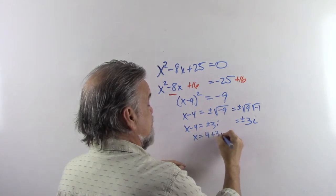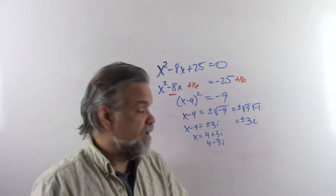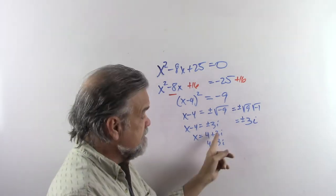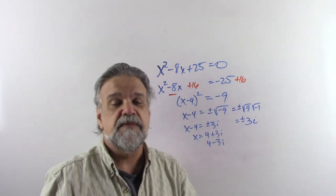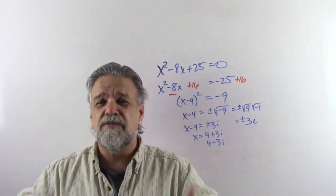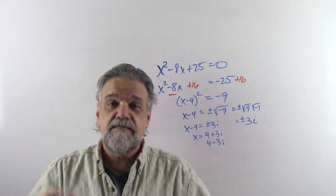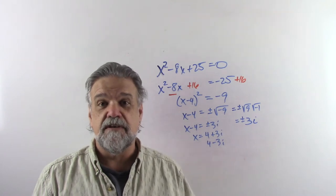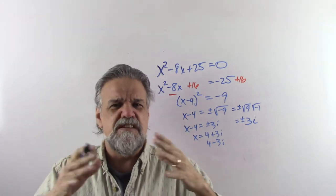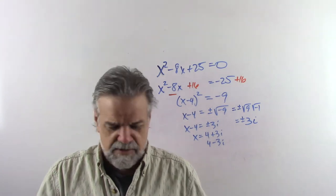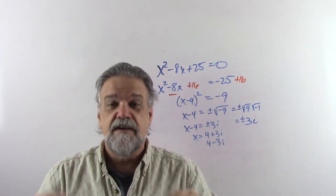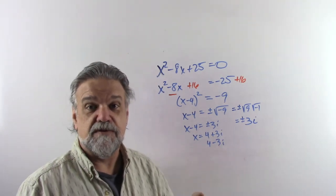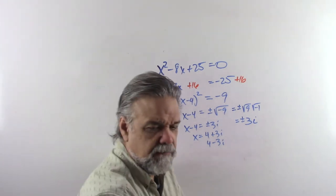So x equals 4 plus 3i or 4 minus 3i. Every complex number has a real part and an imaginary part. The part without an i is the real part; the imaginary part is a real number times i, the imaginary unit. Before you say there's no such thing as imaginary numbers — at about the same time, many mathematicians also had trouble accepting negative numbers. Negative numbers are abstract: there's no such thing as negative 3 trees in your yard. But negative numbers turned out to be very handy, and you might find complex numbers equally useful depending on what you do in the future.